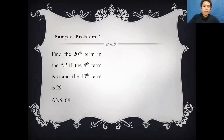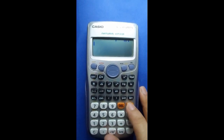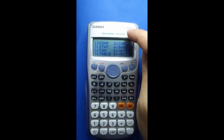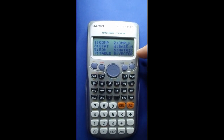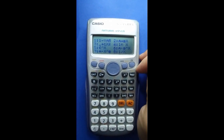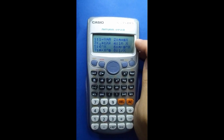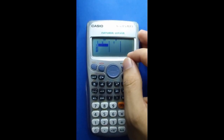Now let's go to sample problems. Sample Problem 1: Find the 20th term in the arithmetic progression if the 4th term is 8 and the 10th term is 29. For arithmetic or geometric progression, we use the Stat mode. Press Mode, then select 3 for Stat. Then select option 2 for arithmetic progression. You will see an x and y values table.